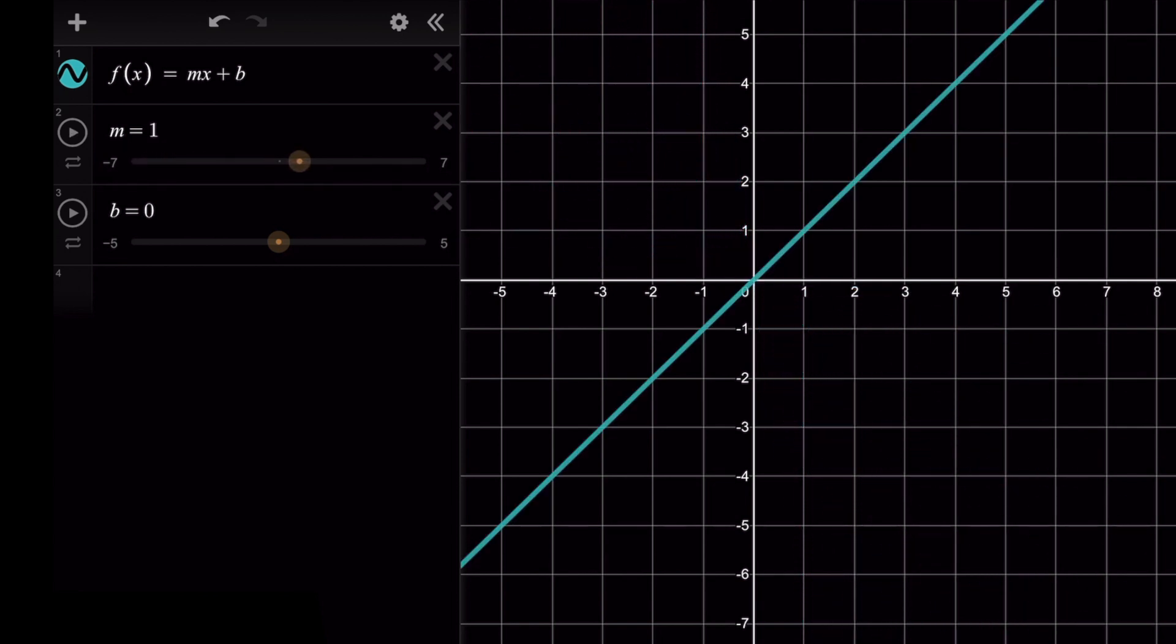This line is going to cover all of the possible inputs and outputs, and so the domain is all real numbers, and the range is all real numbers, which we would write as negative infinity to positive infinity as an interval.